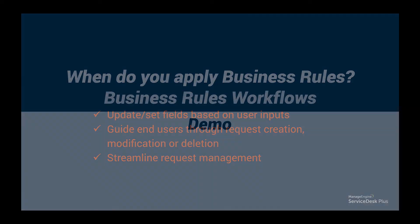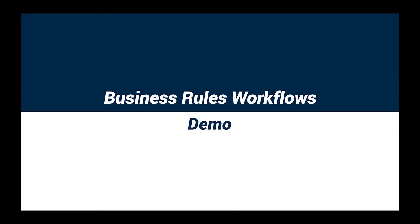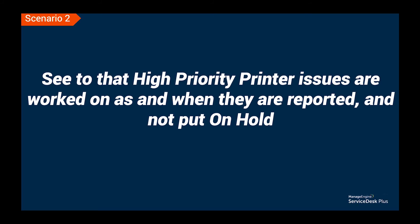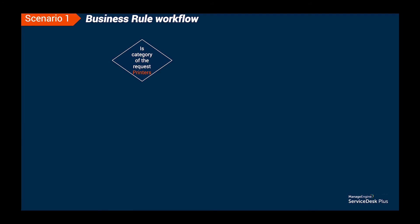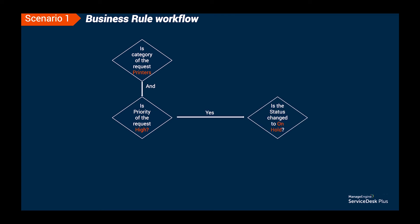Technicians can set up rules and specifications which apply to all incoming tickets, helping them work on incidents in a more organized manner. With the new business rules, apart from making field updates on an incoming ticket, technicians can also set up notifications as part of their workflows and stop a ticket from being created. Here's a scenario: I want to ensure a high-priority printer issue is worked on immediately and never put on hold. Whenever a high-priority printer ticket is put on hold, I want the action to abort.